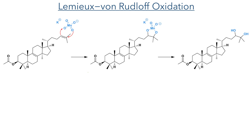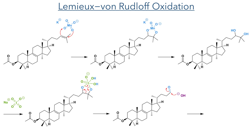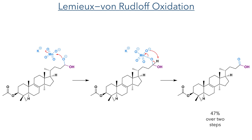The compound first reacts with potassium permanganate, forming a cyclic intermediate that is hydrolyzed to reveal a diol. Reaction with sodium periodate once again forms a cyclic intermediate, which fragments to form an aldehyde. The reaction is carried out in basic aqueous media, and hydroxide can then attack this aldehyde acid, forming a hemiacetal that reacts with another equivalent of potassium permanganate. This abstracts a hydrogen atom and oxidises the molecule to form a carboxylic acid with a 47% yield over two steps. This reaction is quite similar to the Lemieux-Johnson oxidation; however, using potassium permanganate produces the carboxylic acid, unlike the Lemieux-Johnson method which uses osmium tetroxide and primarily produces the aldehyde.